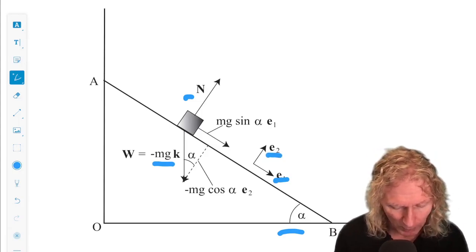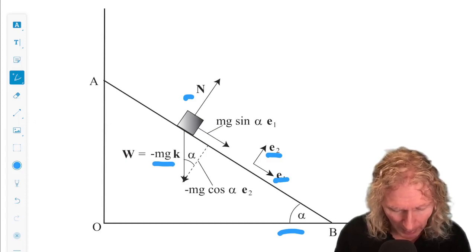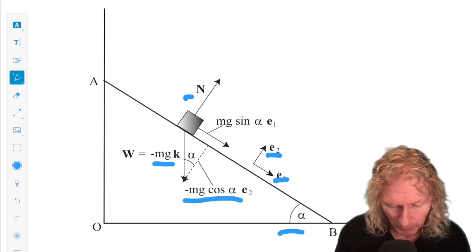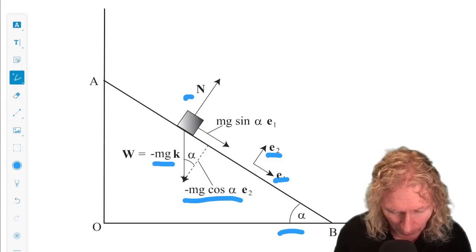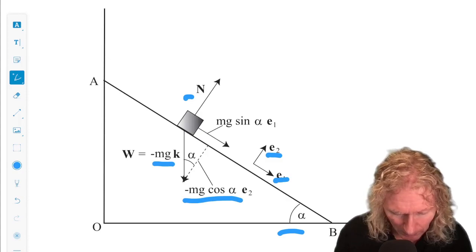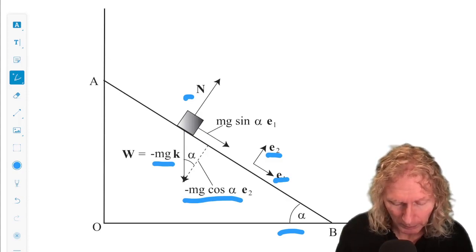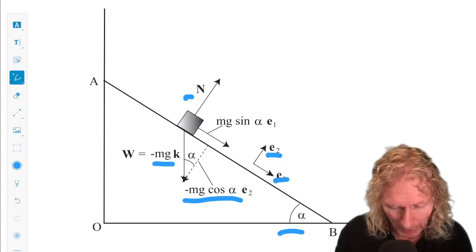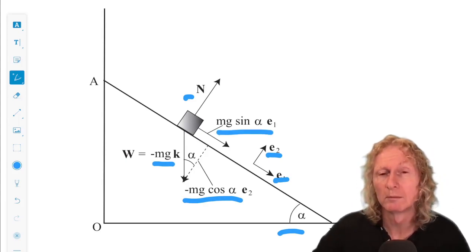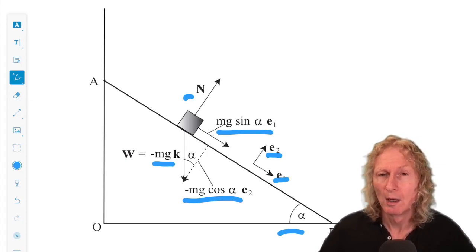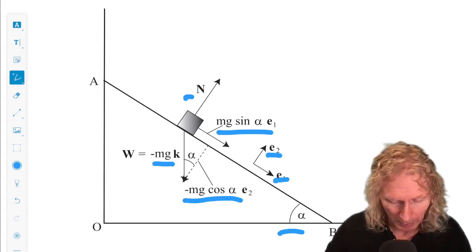And then we can resolve the vector minus mg k using a little bit of trigonometry and similar triangles, minus mg cos alpha e2, because it's in the opposite direction of e2, and mg sin alpha e1. That's the component moving the object down the plane.